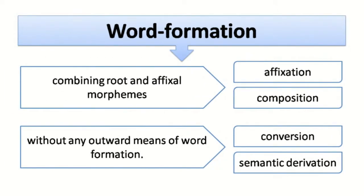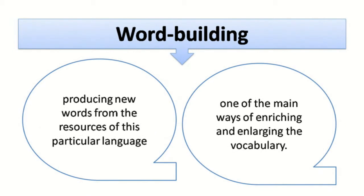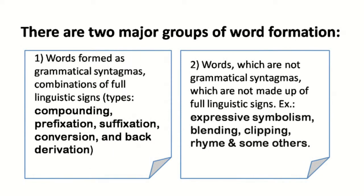Word formation can be of two types. When we combine roots and affixal morphemes, the two major types of word formation are affixation and composition. And when we do not use any outward means of word formation, these two types are called conversion and semantic derivation. Word building is producing new words from the resources of a particular language. It is one of the main ways of enriching and enlarging the vocabulary.